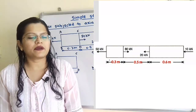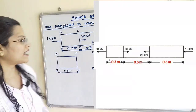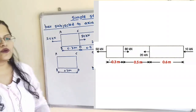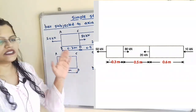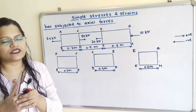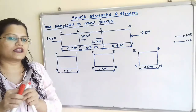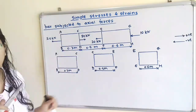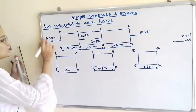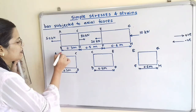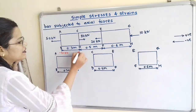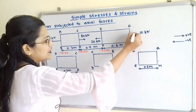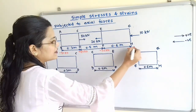We will solve this question by using free body diagram. If we observe the direction of forces, some forces are towards the right hand side and some towards the left hand side. Forces towards the right hand side we will show with positive sign, and forces towards the left hand side with negative sign. At section AB, we show minus 50 kN; on section CD, plus 80 kN; on section EF, minus 20 kN; and on section GH, the force is minus 10 kN.